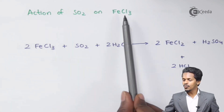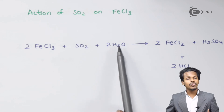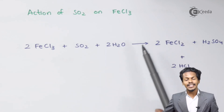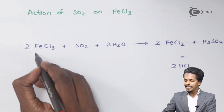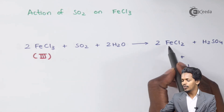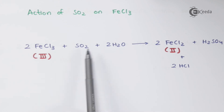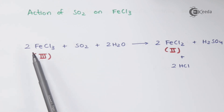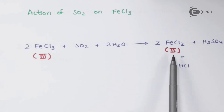The next is the action of SO2 on FeCl3. When 2 moles of FeCl3 is reacted with SO2 in the presence of 2 moles of H2O, the products are 2 moles of FeCl2, H2SO4, and HCl. Here Fe converts from an oxidation state of +3 in FeCl3 to +2 in FeCl2, demonstrating that SO2 is acting as a reducing agent.